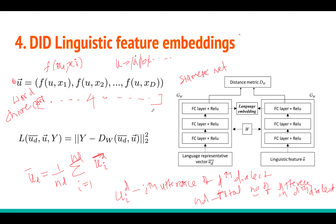This produces a very large and sparse feature vector — for example 40,000 dimensions. This sparse vector is fed into the network, which outputs a dense 200-dimensional vector representing the entire utterance. This is the idea of creating a dense embedding from a sparse n-gram feature vector.